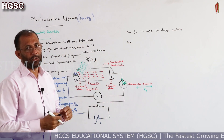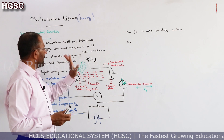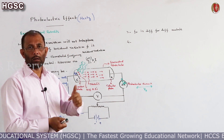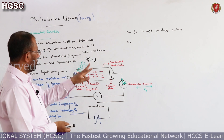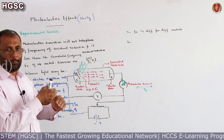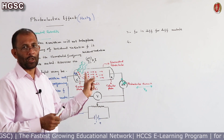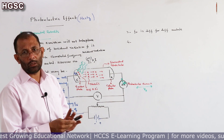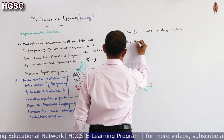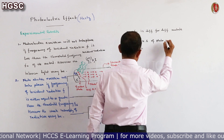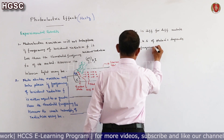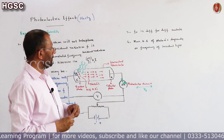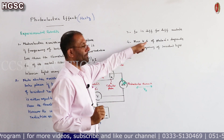Results number 4 and 5, which we discussed graphically a little while ago: the maximum kinetic energy of photoelectrons depends on the frequency of incident light, and it is independent of the intensity of light. We drew two graphs showing that changing intensity changes the photoelectric current but not the stopping potential, while changing frequency changes the stopping potential — meaning maximum kinetic energy depends on frequency.